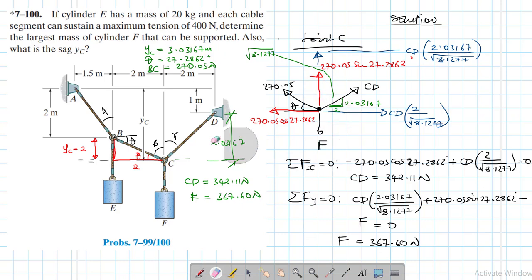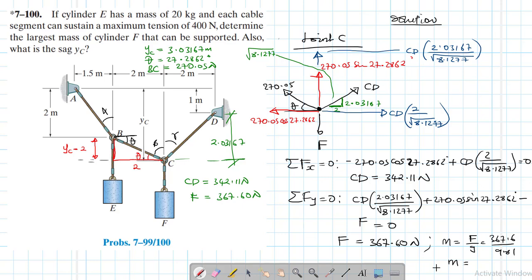Converting to mass: mass = F/g = 367.60/9.81 = 37.47 kg. So the largest mass for cylinder F is 37.47 kg.